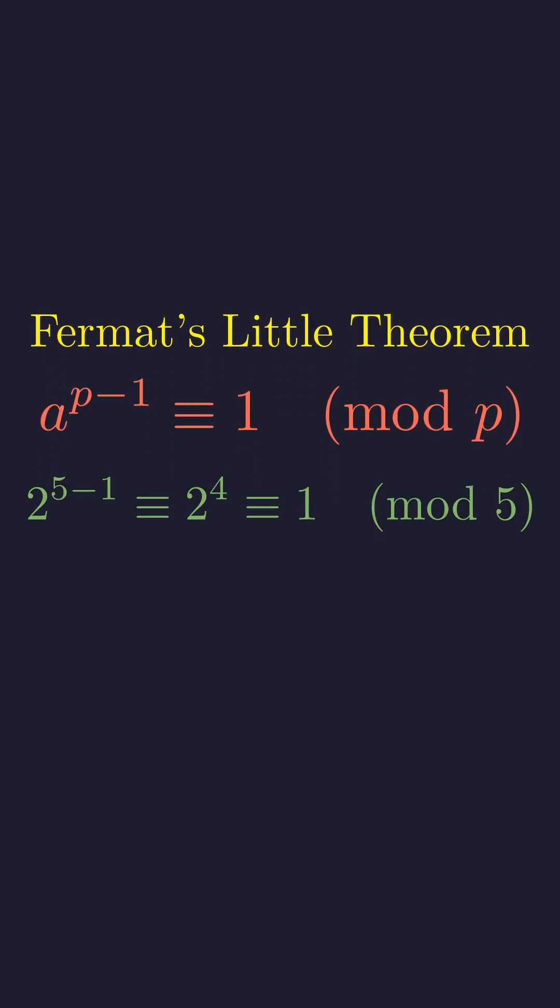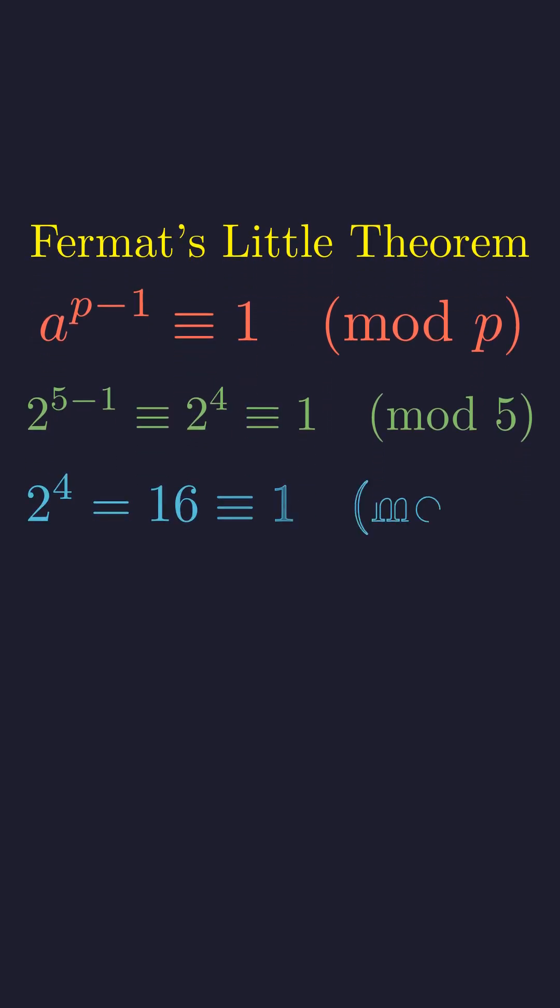In our case, 5 is a prime and 2 is not divisible by 5, so 2 to the 4th power must be congruent to 1 modulo 5. We can check this directly. 2 to the 4th is 16, and 16 leaves remainder 1 when divided by 5. The theorem checks out.